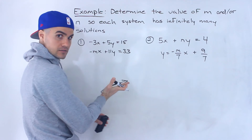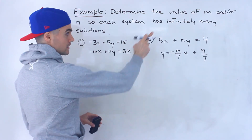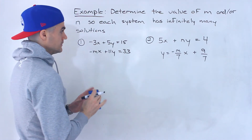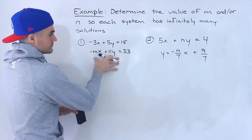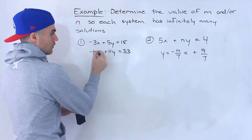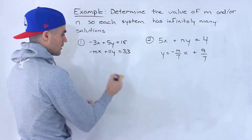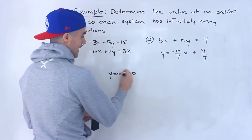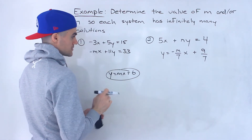So if it's the same line, they're going to intersect at an infinite amount of points — infinitely many solutions. Now, if it's the same line and it's in this kind of format, then the ratios of all of the coefficients and the constants have to be the same. Or if you put it into y equals mx plus b format, basically both lines have to have the exact same equation.